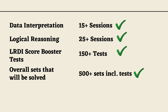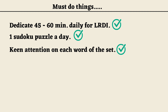Before getting into the offer, let me quickly explain the must-do things to improve your logical ability. The first thing is, from today you have to spend at least 45 to 60 minutes daily for your LRDI section. Whether you are a fresher or a working professional, you can definitely dedicate that time daily. What should you do? You have to practice at least two to three sets of LRDI.